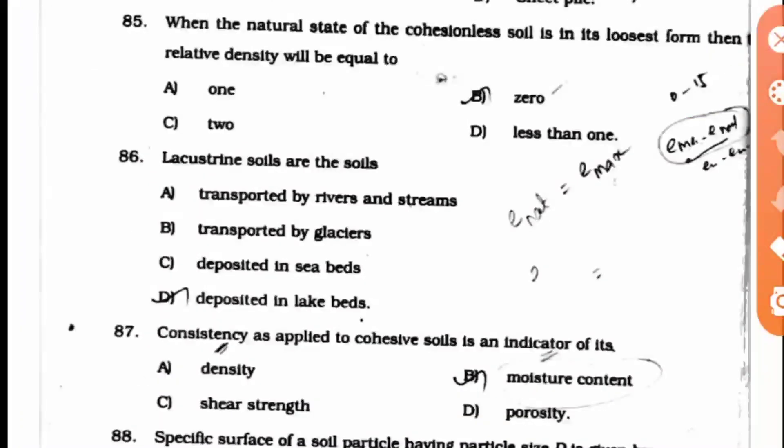Question 85: When the natural state of the cohesionless soil is in its loosest form, then the relative density will be equal to what? We have already studied this relative density formula: E max minus E by E max minus E minimum. Here they have asked for the loosest form, so loosest form means E will be equal to E max. So E max minus E max by E max minus E minimum will be automatically 0.